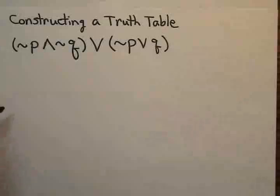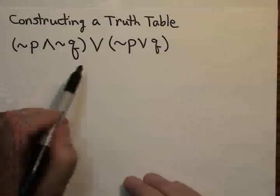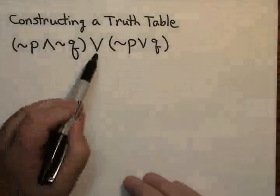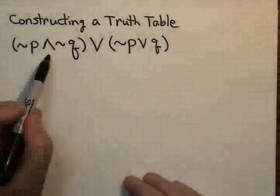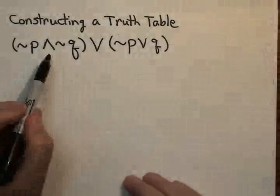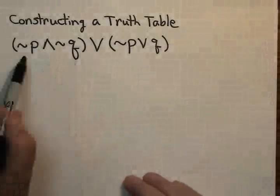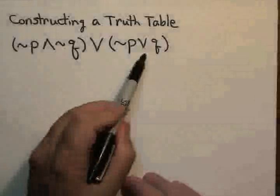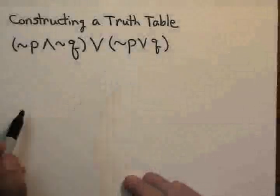Okay, let's do a simple example that would illustrate constructing a truth table. Suppose we want to do the truth table for this statement. It's actually a disjunction of two other statements, the first of which is a conjunction and the second of which is another disjunction.